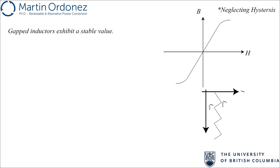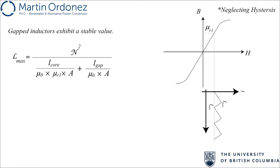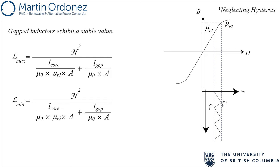One advantage of gapped cores is that they have a stable inductance value over a wide range of operating points. When the current is minimum, the relative permeability is mu_R1. At maximum current, core permeability reduces to mu_R2, increasing core reluctance and causing inductance to drop slightly. Nevertheless, if operating below saturation, in both cases the air gap reluctance still dominates, and the inductance equals N-squared divided by the air gap reluctance. So the inductance value is largely unaffected by changes in core permeability.